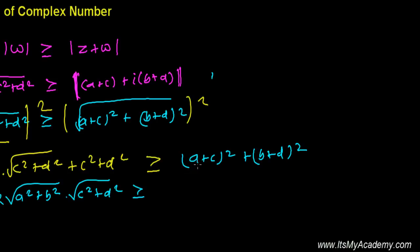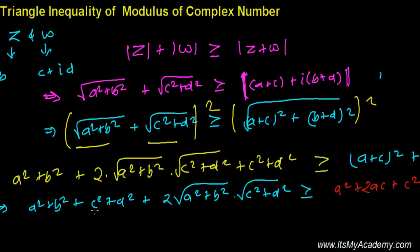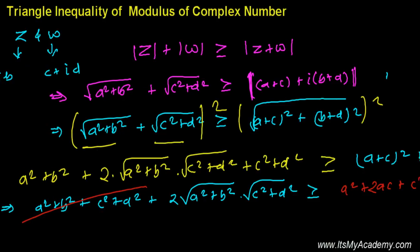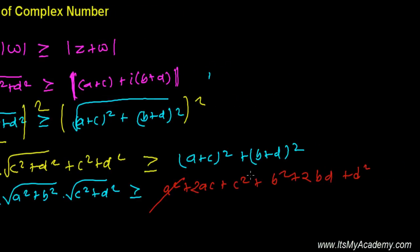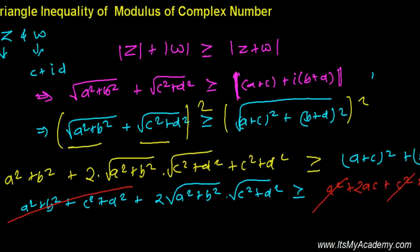Expanding the right side: (a + c)² gives a² + 2ac + c², and (b + d)² gives b² + 2bd + d². Now notice that a², b², c², and d² appear on both sides and cancel out, leaving just the cross terms.